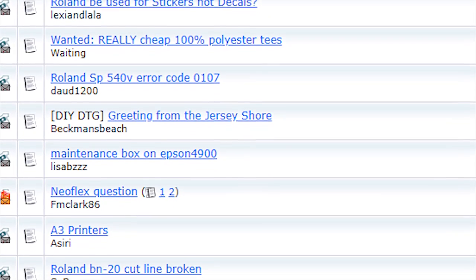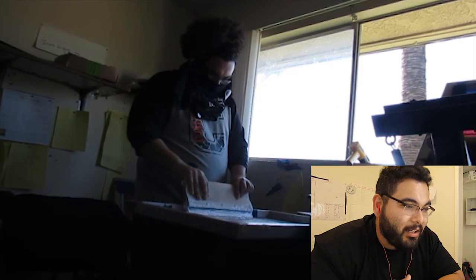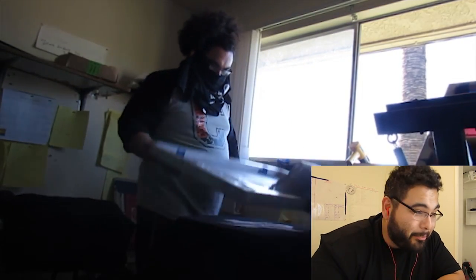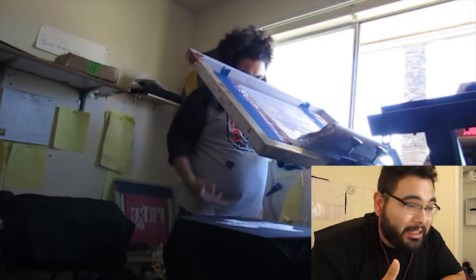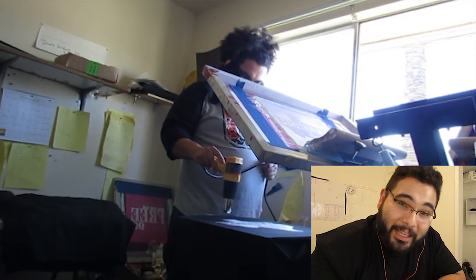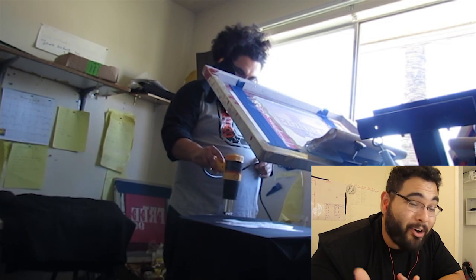Once you're done with that, get some practice, make some designs, then upgrade to a four-color so you can start doing two colors and more. Upgrade to plastisol ink, get yourself a heat press, and now you'll be making great quality shirts.